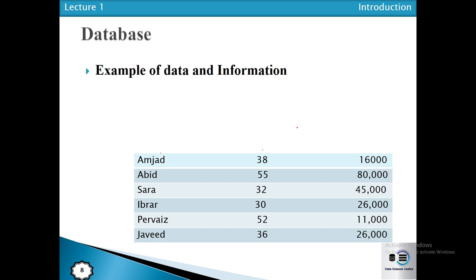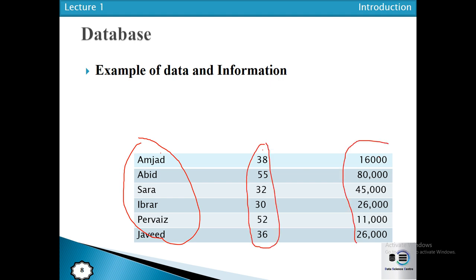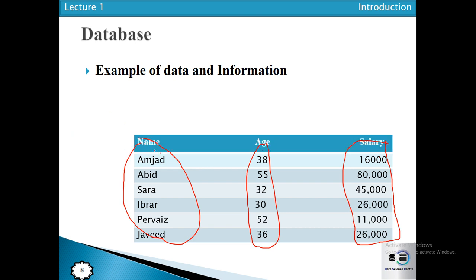For example, if we have rows and columns of data with no column names, we cannot say anything about it — someone might say it is age, someone else might say it is a salary or donation. This data is in raw form and we don't have proper information. Once we process it — for example, by naming the columns — that is one form of processing, and it increases the knowledge of the person who uses it.